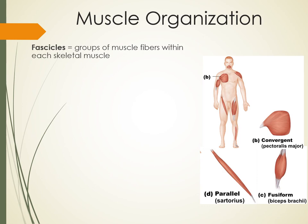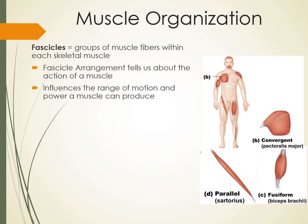Let's start with muscle organization. When we looked at microscopic and macroscopic anatomy of muscles, we said muscle cells are also called muscle fibers, and when we group those muscle fibers together we call them fascicles. The way those fascicles are arranged tells us a lot about the action of that muscle — both the range of motion and the power it can produce. This arrangement of the fascicles is really important.